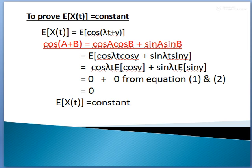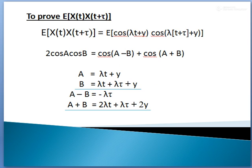So we got E[x(t)] = 0, which is a constant. The first condition is proved. Now for the second condition, we need to show E[x(t)·x(t+τ)] = R_xx(τ) = constant depending only on τ.